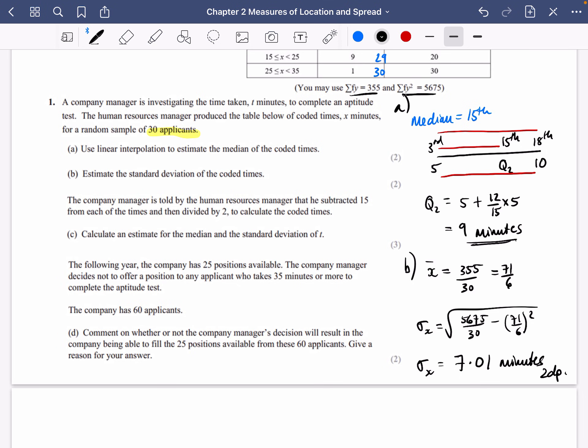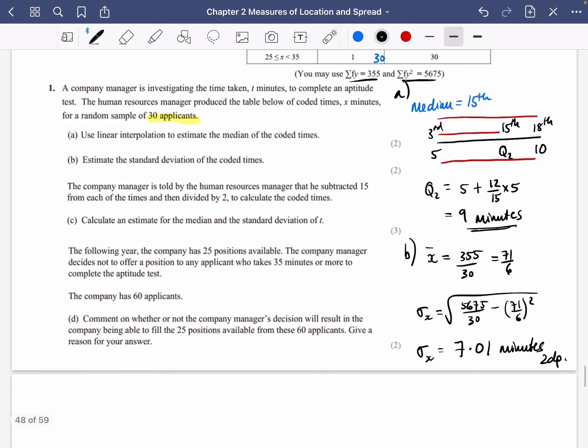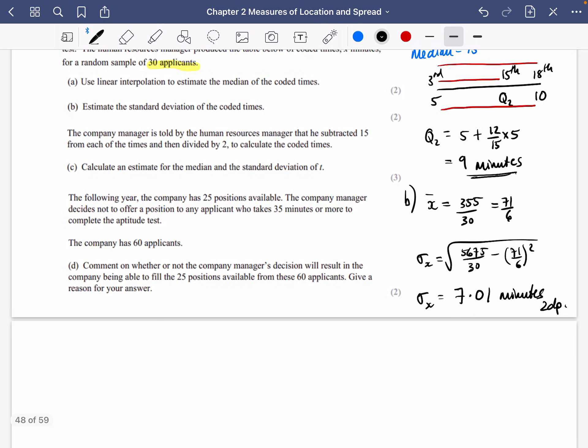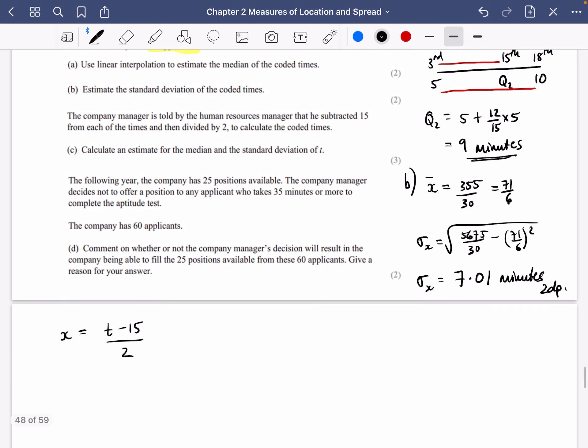Part C. The company manager is told by the human resources manager that he subtracted 15 from each of the times and then divided by 2 to calculate the coded times. Calculate an estimate for the median and the standard deviation of T. So what did he do to get the X values? To get the X values, he subtracted 15 from each of the times and then he divided by 2. So that's how the coding happened. So we're now going to try and find out the median and the standard deviation.